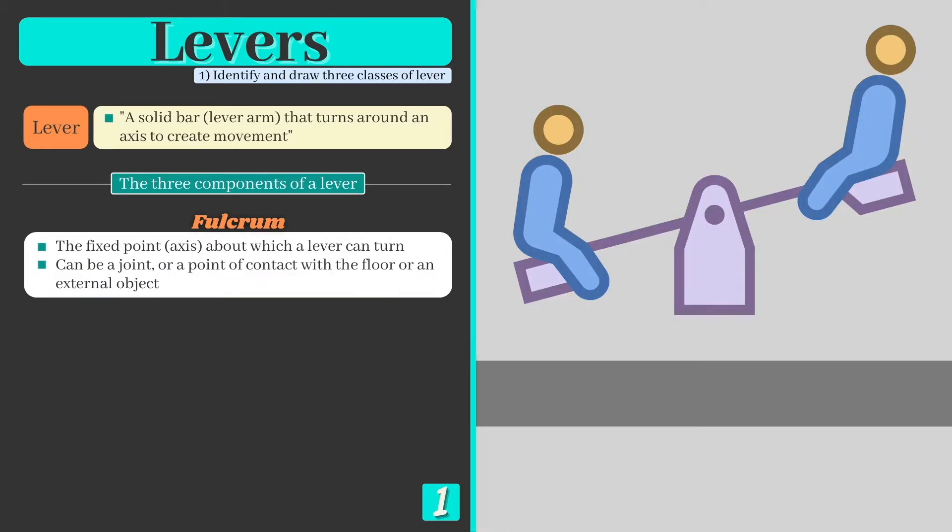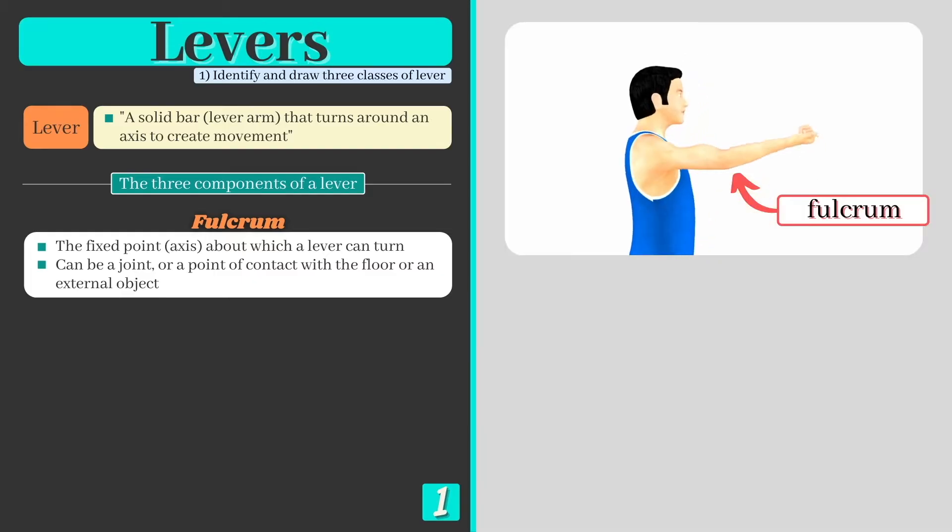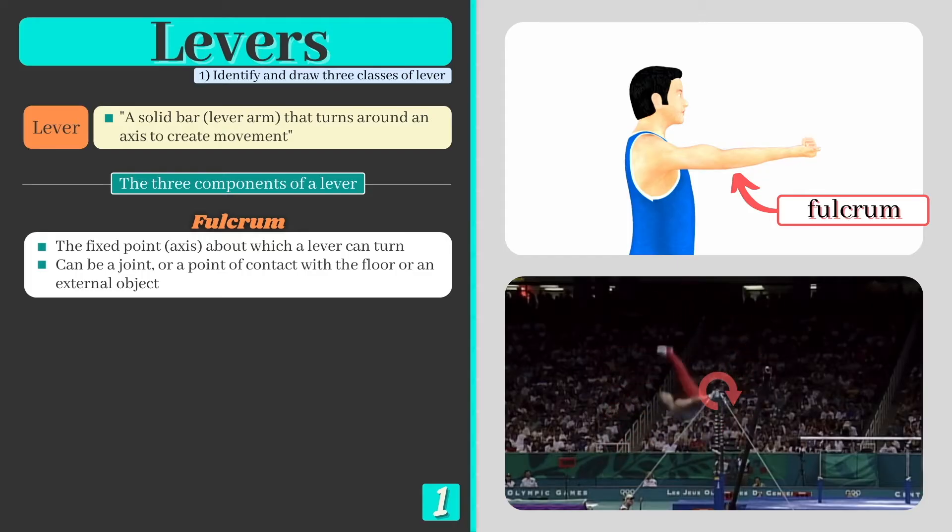Levers are comprised of three different components, the first of which is called the fulcrum or the fixed point or axis about which the lever can turn. Human levers typically use joints as their turning points, but fulcrums can also be found outside the body when rowing, vaulting or when performing a routine on the horizontal bar.